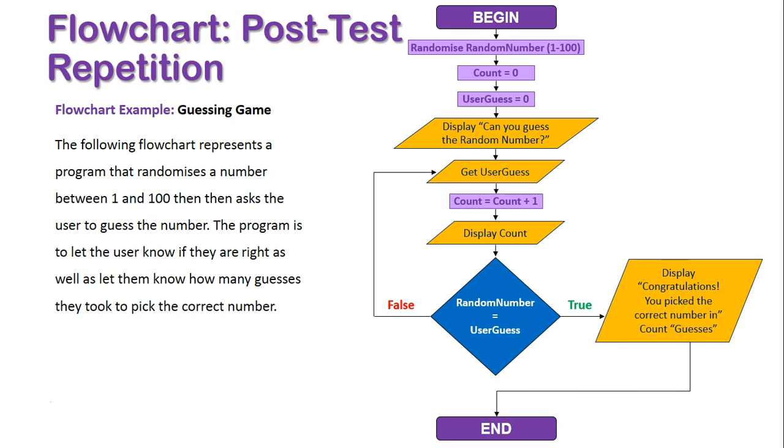I hope you can see here, as well, how in post-test repetition, the diamond is placed after the steps in the loop, and then loops back to the actual body of the loop where it initiated, where essentially the REPEAT statement in pseudocode started the loop.